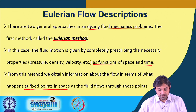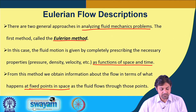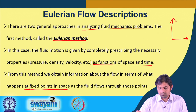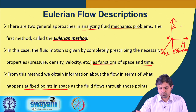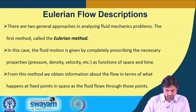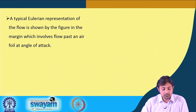In Eulerian flow description, we describe the flow properties in terms of what happens at fixed points in space. The observation is taken from a fixed point in space. Suppose we define a coordinate system x, y, z — if we place our observer at any fixed point and keep observing a particle moving past, that is Eulerian in nature.